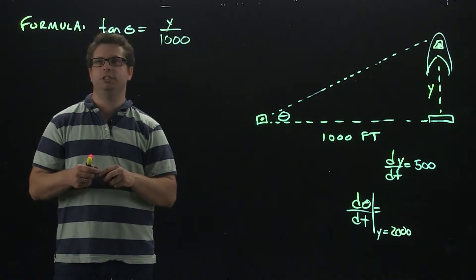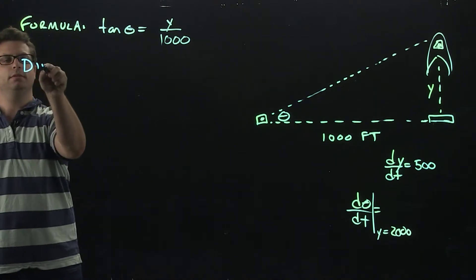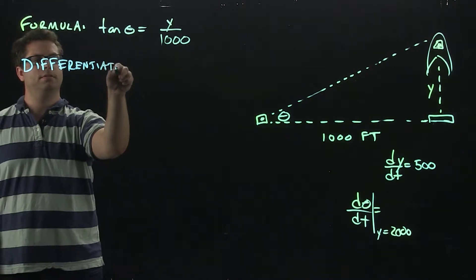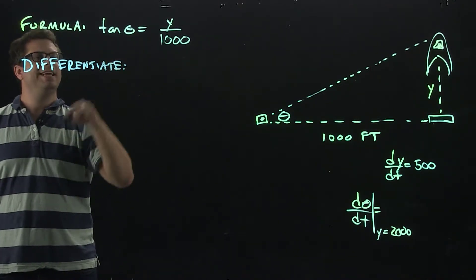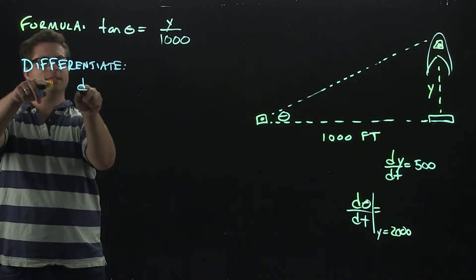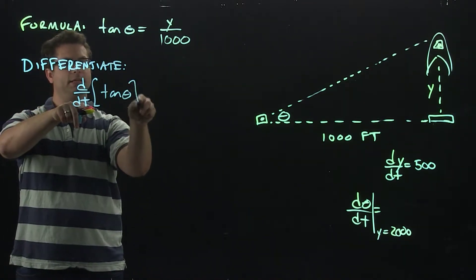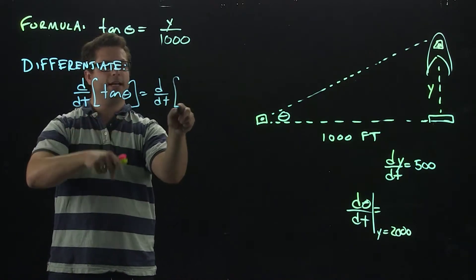Next, we're going to have to differentiate both sides. Sorry for the squeaks. We're going to differentiate both sides. We're going to take the derivative of tangent with respect to t, and then we'll do d/dt of the right-hand side.